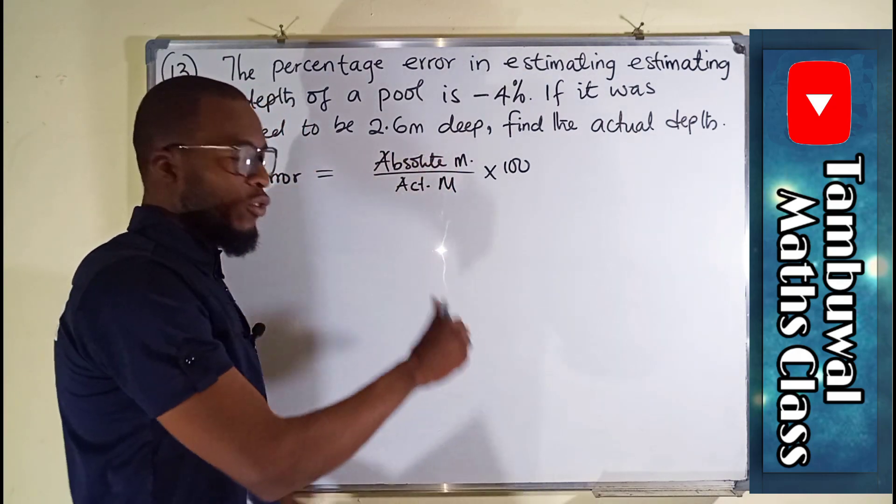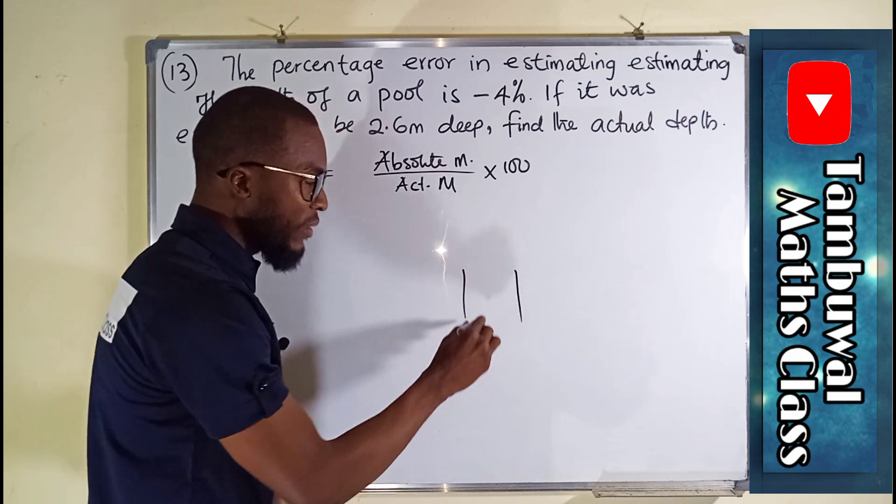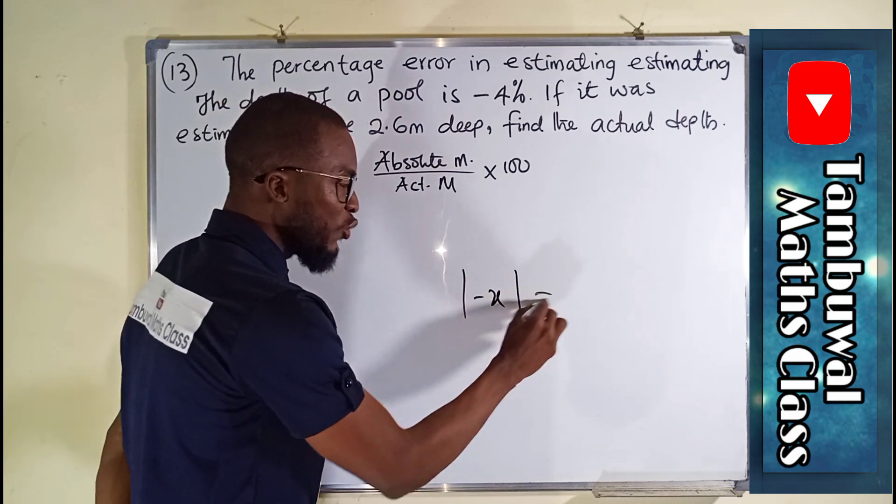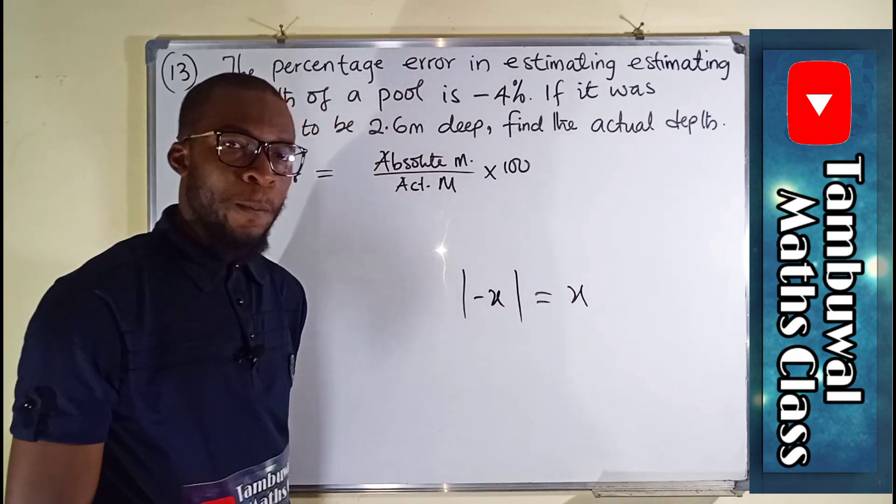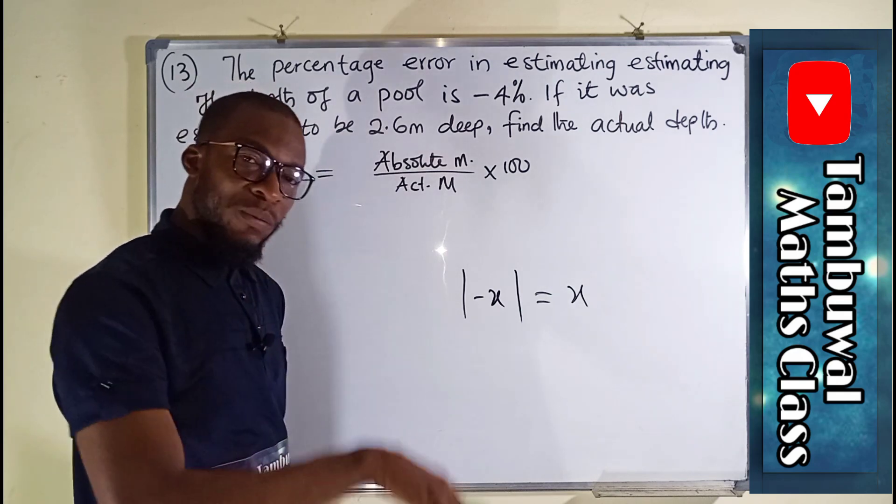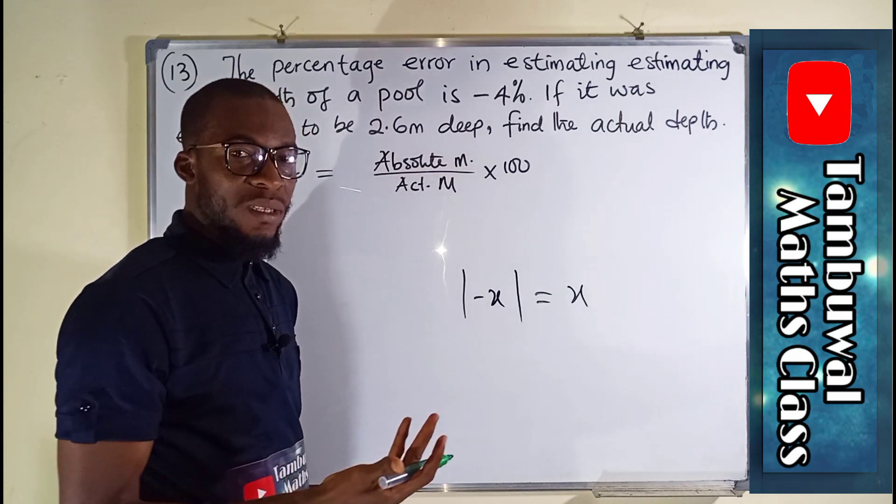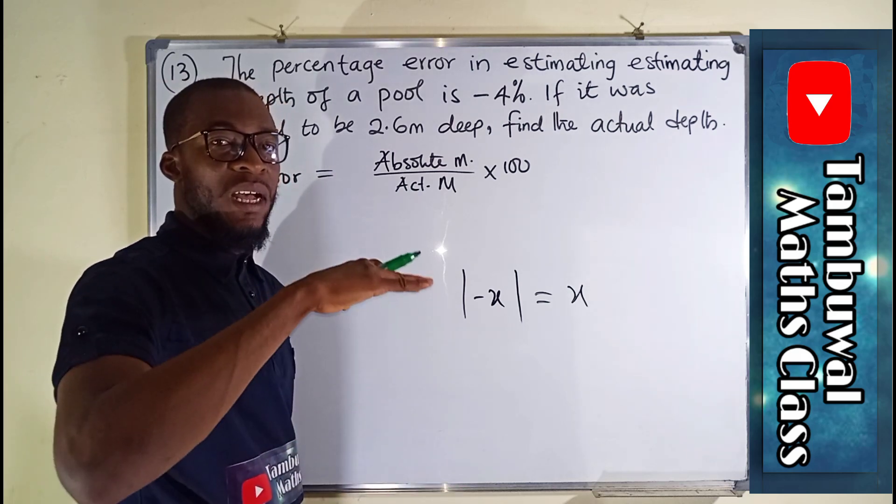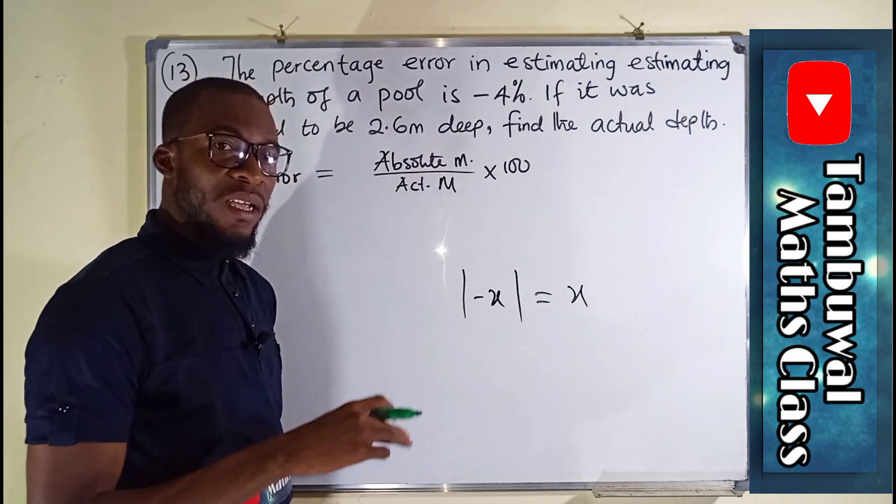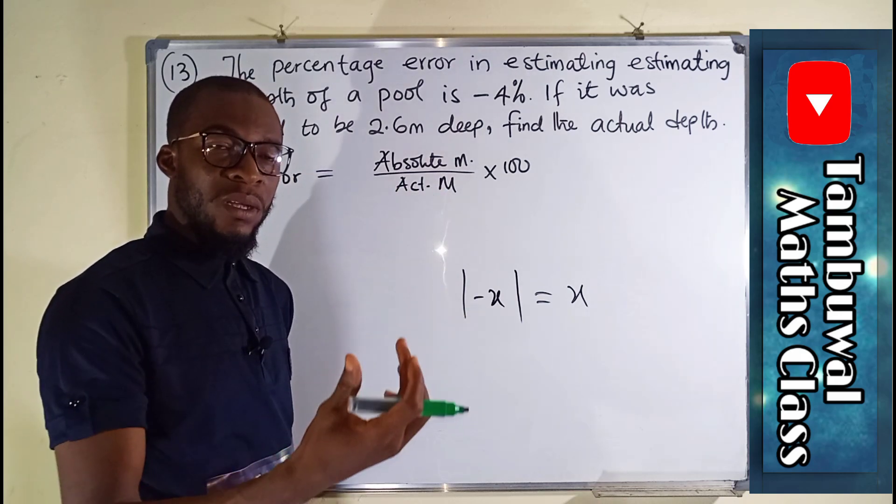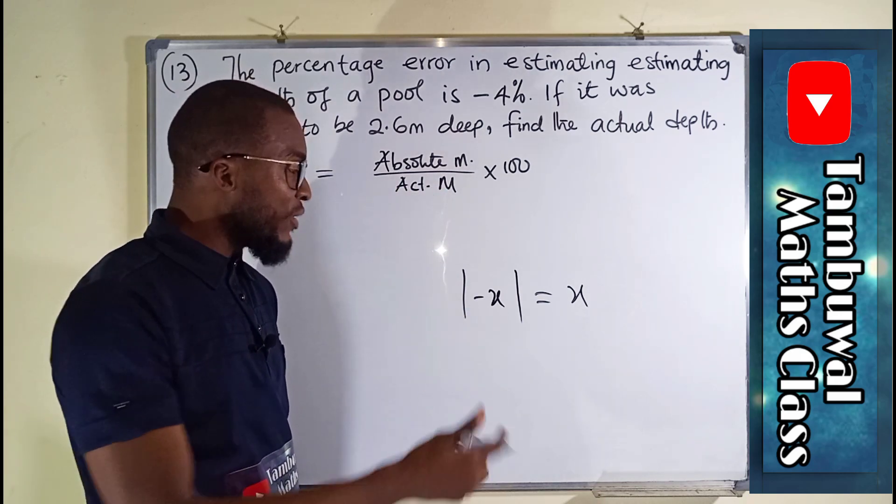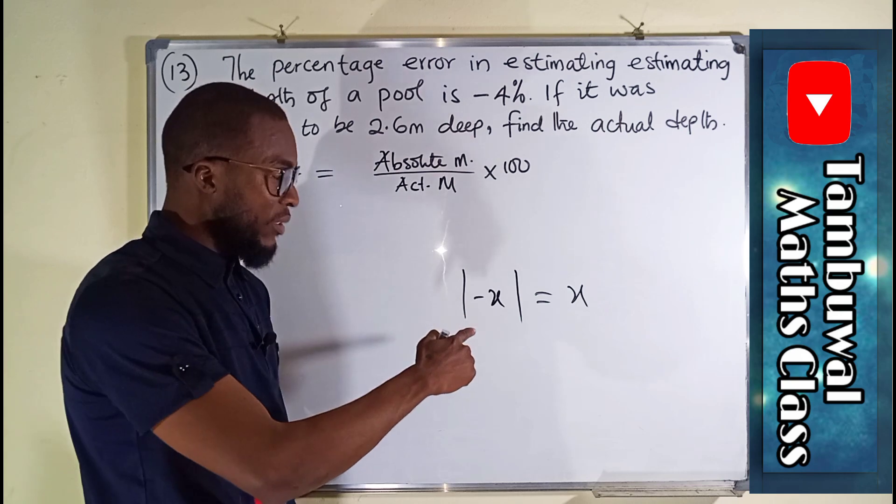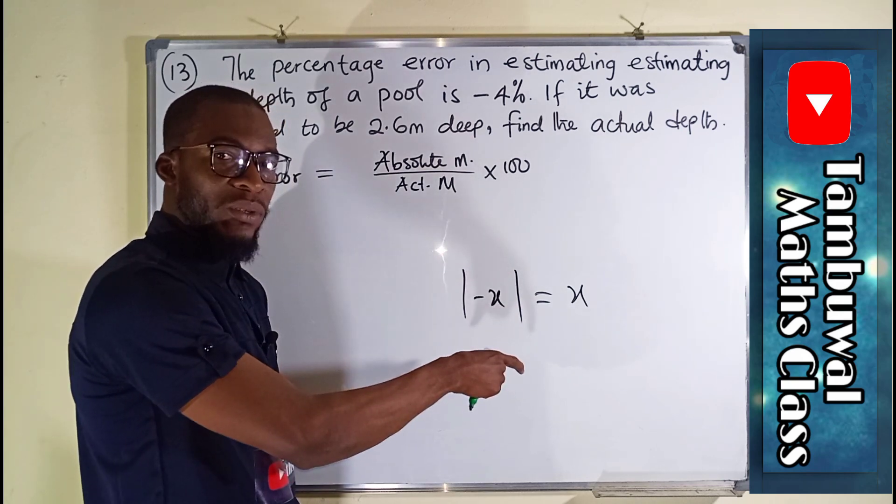This absolute measure means the real measure minus the underestimated or overestimated measure. The reason why we use absolute, you know, absolute normally converts negative values to positive values. This means that if the depth of the swimming pool was overestimated, it means that the estimated value is greater or higher than the actual measure. In that case, if you say actual measure minus the overestimated measure, you are going to get a negative result. And hence, if you take the absolute measure, it will vanish the negative sign.